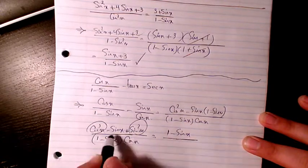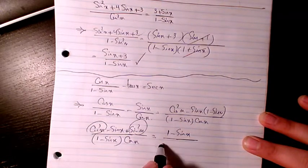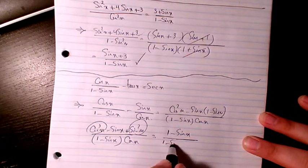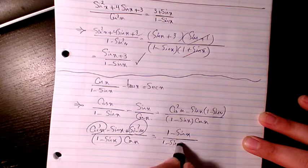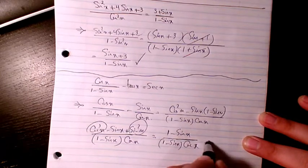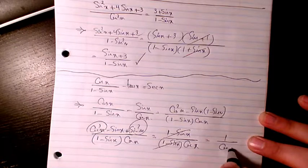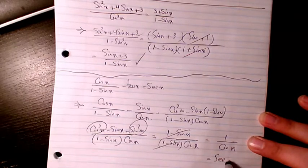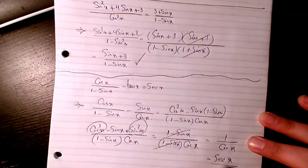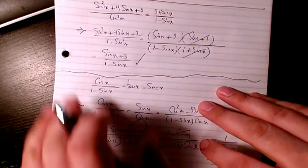Because of the negative sine x, the numerator is 1 minus sine x. The 1 minus sine x factors cancel out, leaving 1 over cosine x, and 1 over cosine x is the same as secant x.